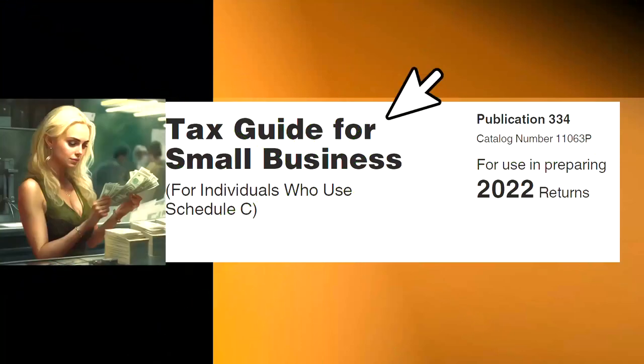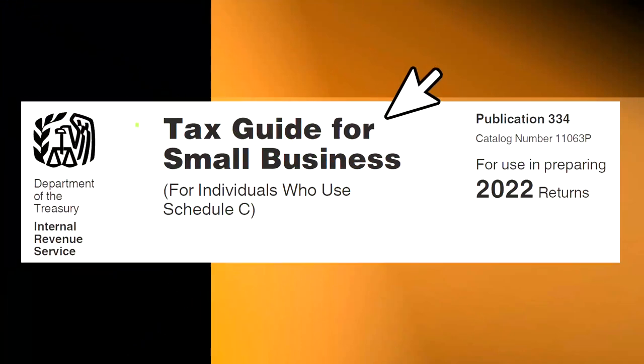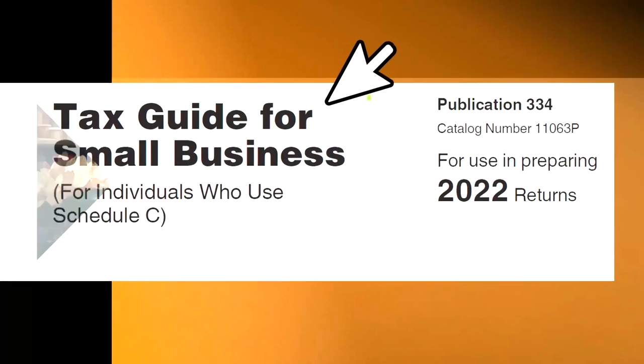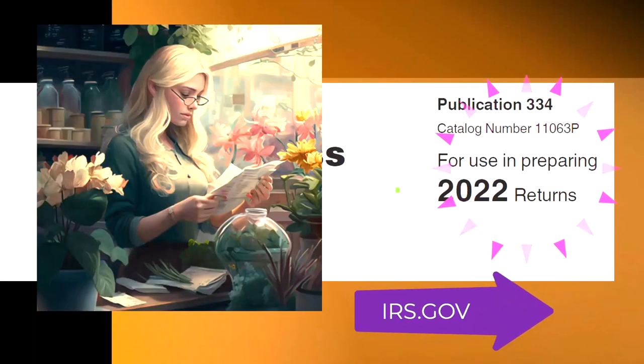Most of this information comes from the Tax Guide for Small Business for individuals who use Schedule C, Publication 334, Tax Year 2022. You can find it on the IRS website, irs.gov.